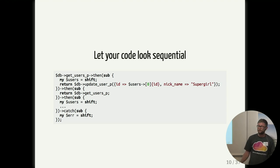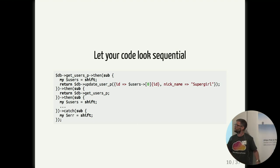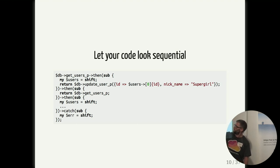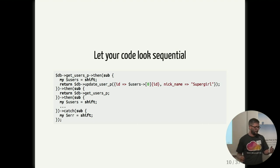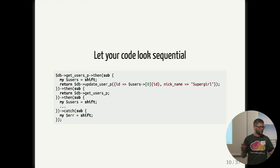A promise-based API on the other hand looks a lot more sequential - the code doesn't have a lot of indentation and it just reads a lot better. Inside the first fulfillment callback you call a new method that returns a new promise, and the next fulfillment callback won't be called until that returned promise is fulfilled. Also if any promise anywhere in the chain incurs any error, you only need one catch at the end - the errors propagate through all the promise objects back to wherever your code is.